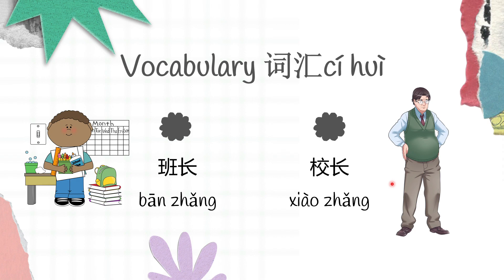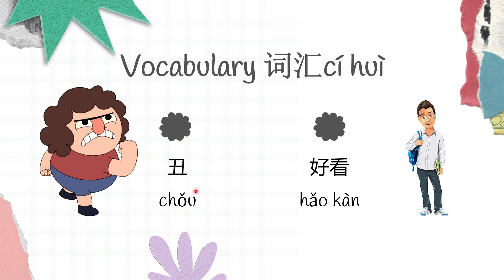Moving on to the next slide, we have 丑 and 好看. The meaning of 丑 is ugly and the meaning of 好看 is good looking. So 丑 is ugly, 好看 is good looking. Let's read together: 丑, 丑, 丑. 好看, 好看, 好看.